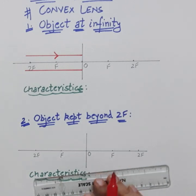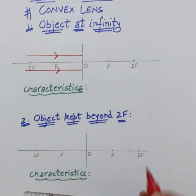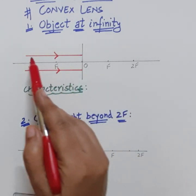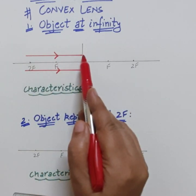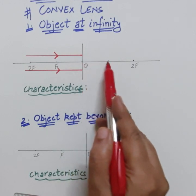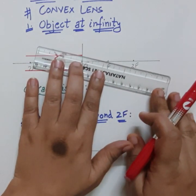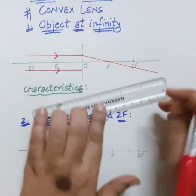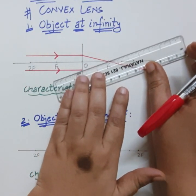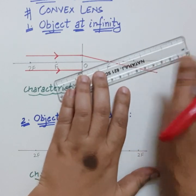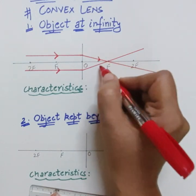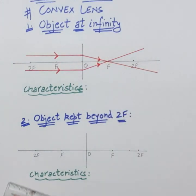We draw the two parallel rays with arrows. After passing through the lens, from rule number one: a ray parallel to the principal axis will pass through the focus after passing through the lens. Both parallel rays pass through the focus. Draw the arrows and the shape of the lens.